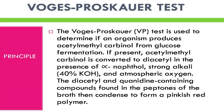The Voges-Proskauer test is used to detect acetoin in a bacterial broth culture. The test is performed by adding alpha-naphthol and potassium hydroxide to the VP broth inoculated with bacteria. Voges and Proskauer in 1898 first observed the production of a red color after adding potassium hydroxide to cultures on specific media. Harden later revealed that the red color was a result of acetylmethylcarbinol production.